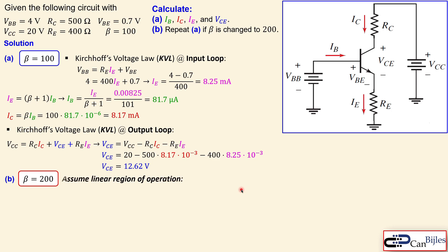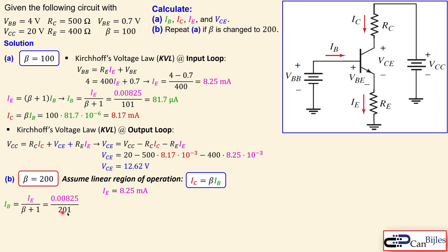For beta equal to 200, we repeat the process. The emitter current remains 8.25 milliamps because this loop has no beta dependency. However, IB must be recalculated: IE over (beta + 1) is now 8.25 milliamps over 201, giving 41.04 microamps — decreased from 81.7 microamps. The collector current is 200 times 41.04 microamps, giving 8.21 milliamps — very little change.